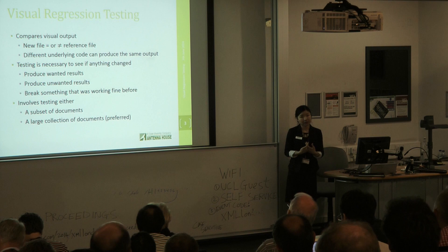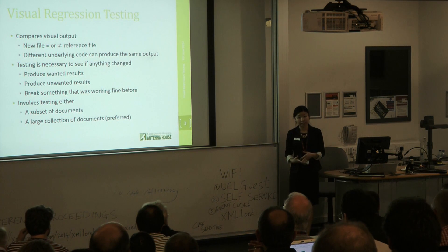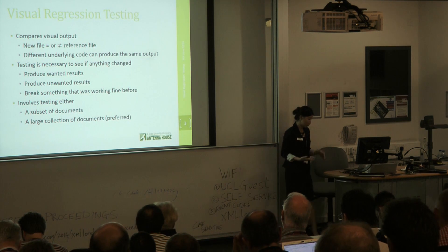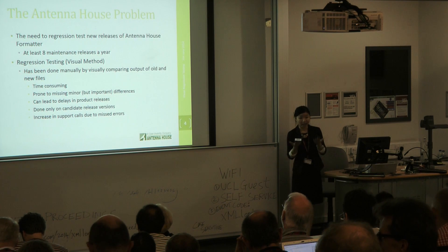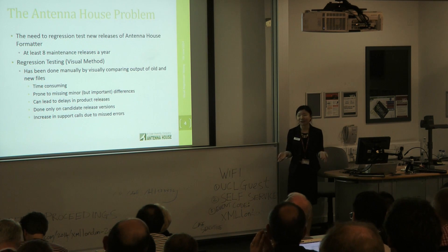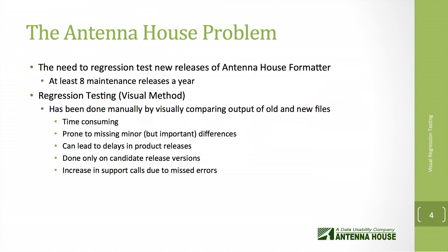Our test suites generally consist of around 10,000 pages. It used to take our Japanese developers who did the regression testing around three days to complete, because they did it manually. That's what we used to do — we would just use the human eye to look and compare 10,000 pages and see if there are any changes. It's prone to errors, and there's no way you can find every single change just using humans. It's very time-consuming, inefficient, and it often led to delays in product releases.